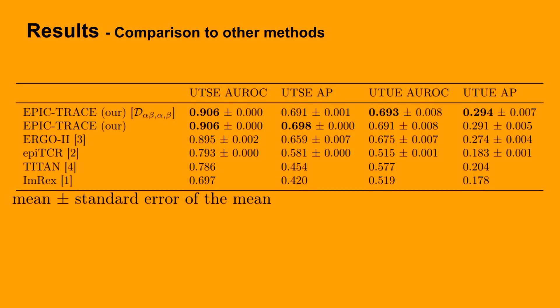We compared our model against other models using the epitope amino acid sequence, done in a 10-fold cross-validation setting. We calculated the mean of the average precision and the AUROC. As can be seen from the table, our model outperforms EpiTCR, TITAN, and ImRex, and performs also better than ERGO2.